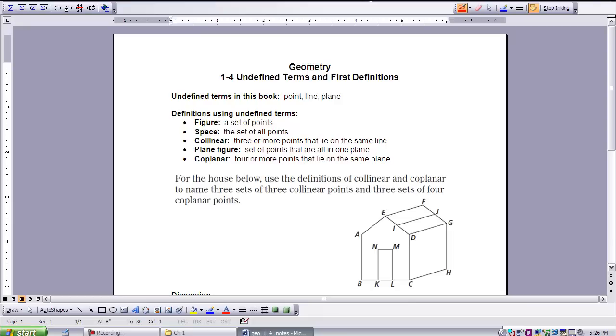Collinear: three or more points that lie in the same line. Plane figure: a set of points that are all in one plane. Coplanar: four or more points that lie on the same plane.